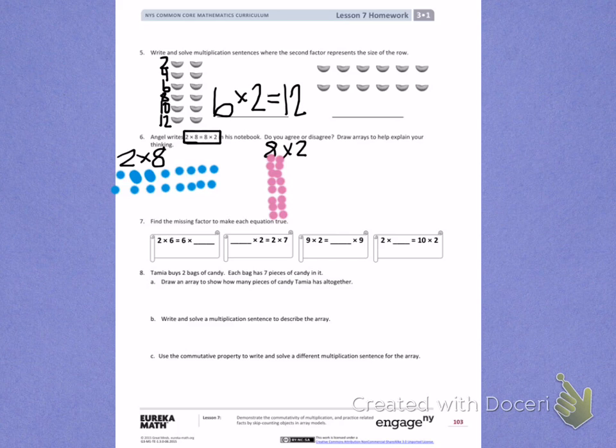First, I see 2 times 6, so 2 groups of 6 equals 6 groups. If I'm using the commutative property, I should have 6 groups of 2.